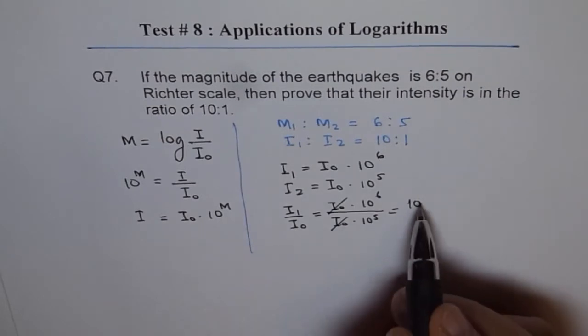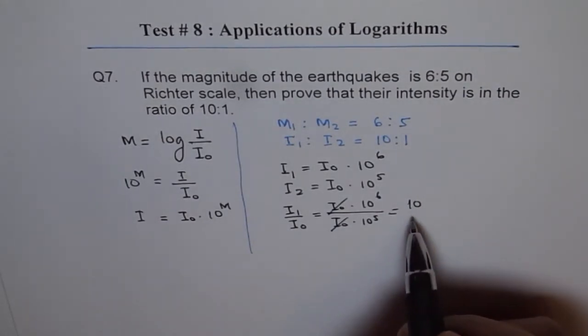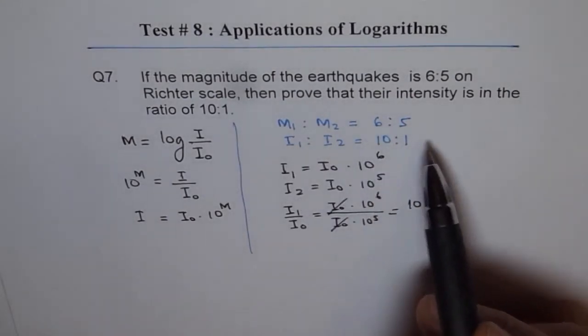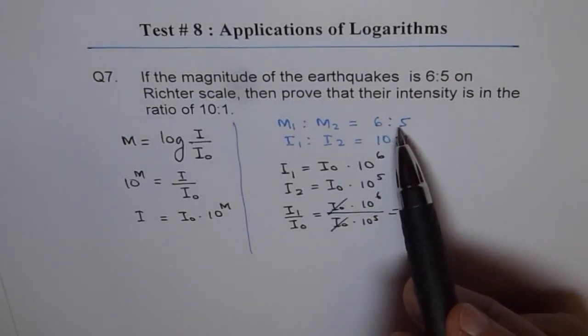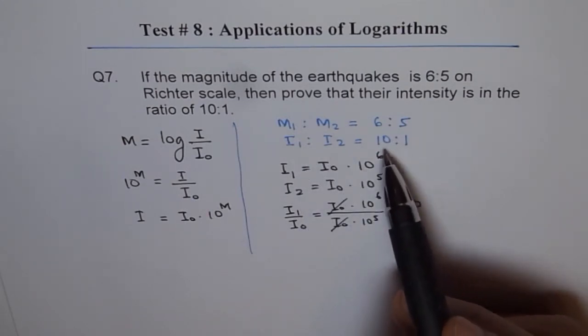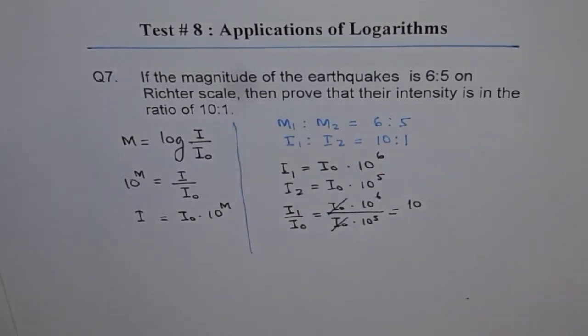So the ratio is 10 to 1. That is how we can show that if magnitude on Richter scale is 6 to 5, that is 1 more, then the intensity is 10 times more. So that is how we can prove this. Thank you.